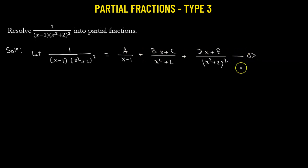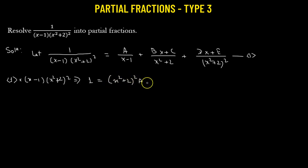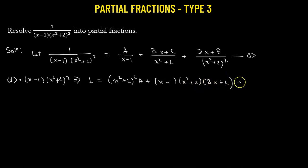We label this as equation number 1. To begin, we multiply both sides of equation 1 by x minus 1 times x squared plus 2 whole squared. On the left-hand side, we are left with only 1. On the right-hand side, we have A times x squared plus 2 whole squared, plus x minus 1 times x squared plus 2 times Bx plus C, and then x minus 1 times Dx plus E.